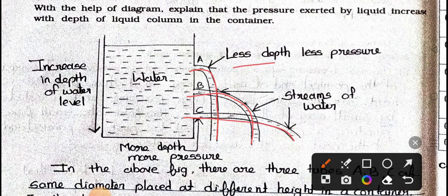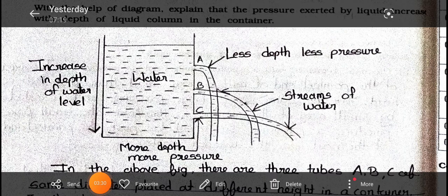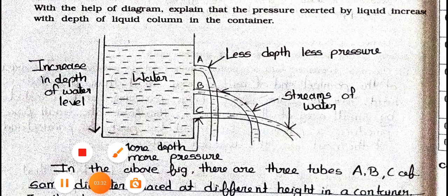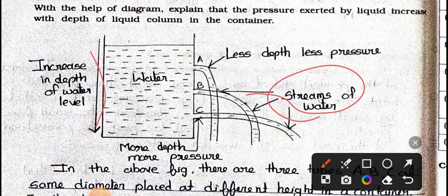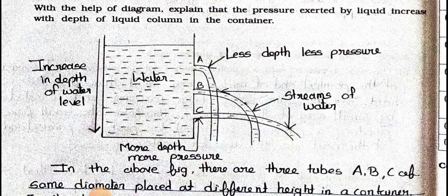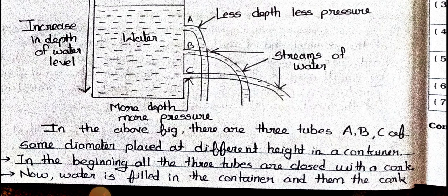See the distance. Less depth means less pressure. Then B and C, see the streams of water. Here, increase in depth of water. More depth, more pressure. For C, more depth and more pressure.